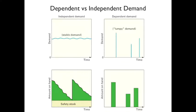First we're going to talk about dependent versus independent demand. On the left is what might be considered independent demand, where the demand is fairly stable — it goes up and down a little bit, but it's fairly stable. You have on hand inventory with a little bit of safety stock. You order, it goes down to the safety stock, you order again, it goes down. That's fairly straightforward.